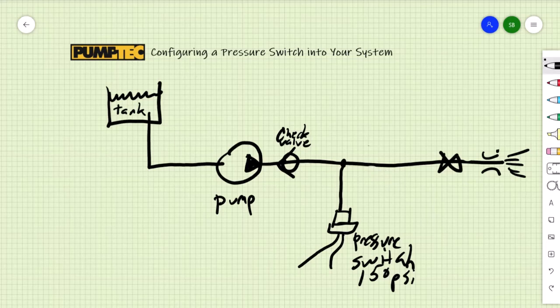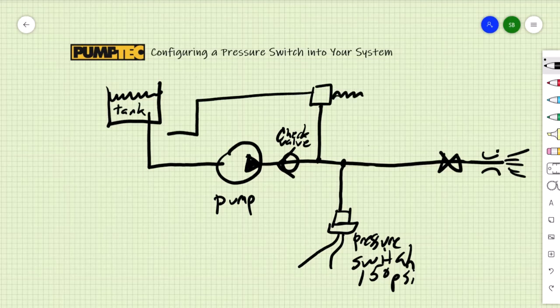Another thing to consider when using a pressure switch is the use of an overpressure safety device. Here I'm showing a regulator with a discharge back to tank. Since this safety device won't be used typically unless there's some other failure, you can actually run the discharge just out to atmosphere.